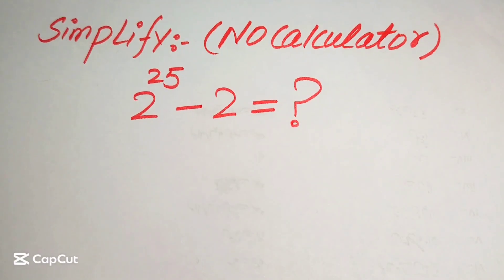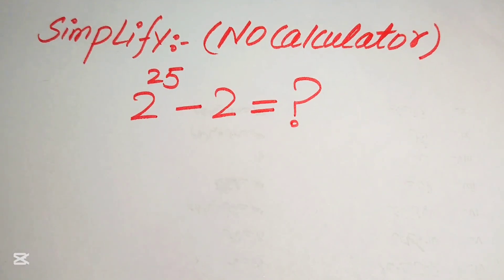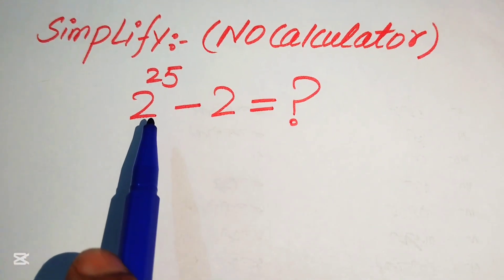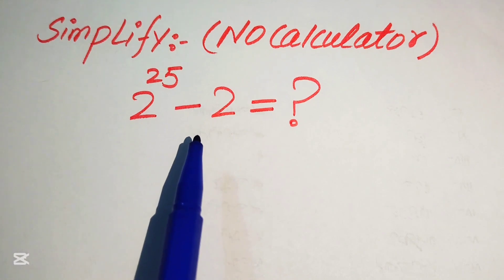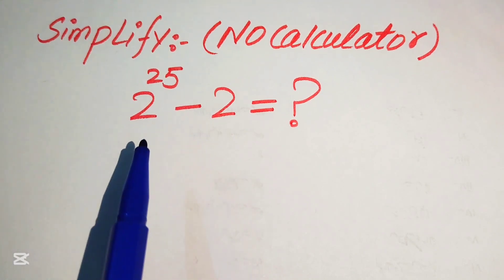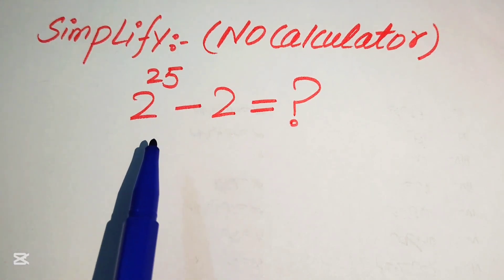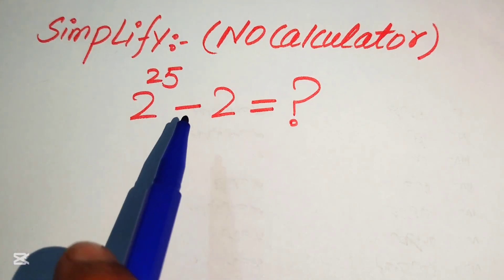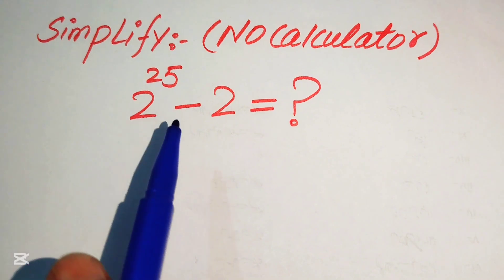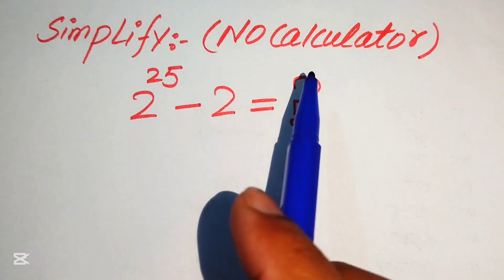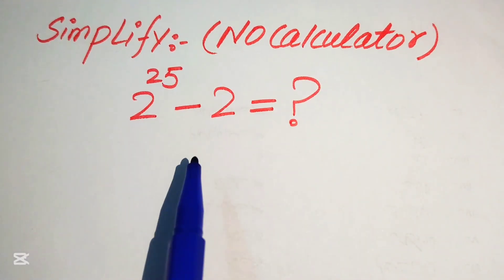Hello everyone. How to simplify this nice algebraic expression: 2 to the power of 25 minus 2. We simplify this expression without using a calculator — in this problem, a calculator is not allowed.